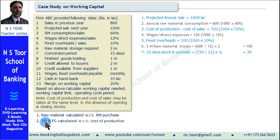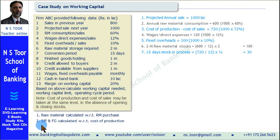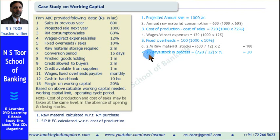Stock in process and finished goods are calculated with reference to cost of production. Finished goods are calculated with reference to cost of sales. But here cost of sales and cost of production are the same, so both shall be calculated with reference to cost of production, which is 720 for the whole year. For 1 month it will be 720 divided by 12 = 60. For 15 days (half month) it will be 30. So stock in process value is 30.